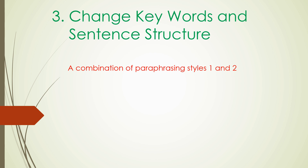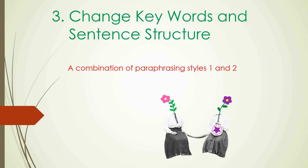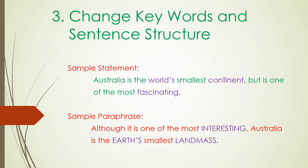So, for the last paraphrasing style, it is a combination of the first two: change keywords and at the same time change sentence structure. Let's use the example again — Australia is the world's smallest continent but is one of the most fascinating. For the paraphrased version, the part that says 'but is one of the most fascinating' now comes at the start of the sentence, and I changed the conjunction 'but' to 'although.' Then 'Australia is the world's smallest continent' becomes the second part. I also replaced keywords in the sentence — the ones colored purple. So basically, this is how you use paraphrasing style number three.